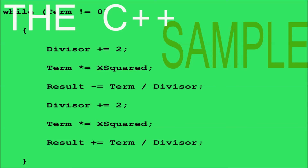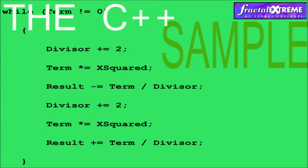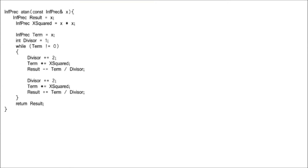There are several methods of calculating pi. We are using the Machin formula because it is simple and fast for ordinary calculations — we don't expect to break any records here. The algorithm from Fractal Supreme will be used as an example, and we will show you how to implement it while maintaining the simplicity and effectiveness of C++.